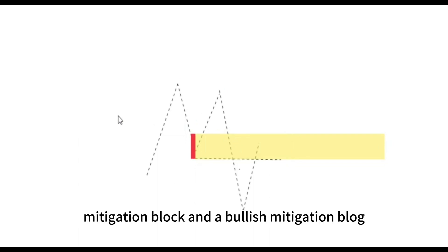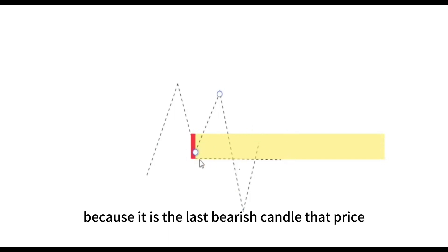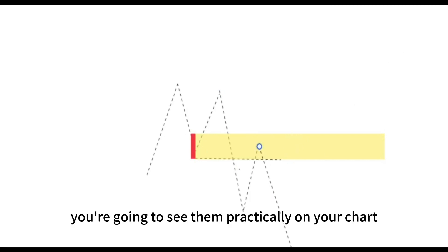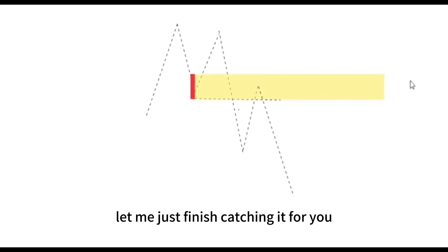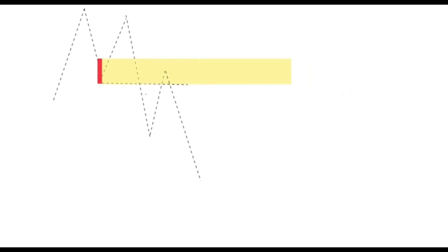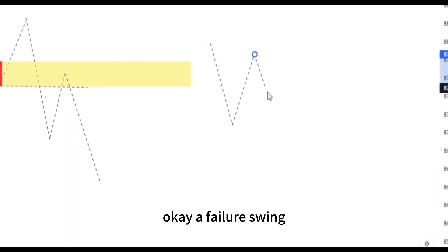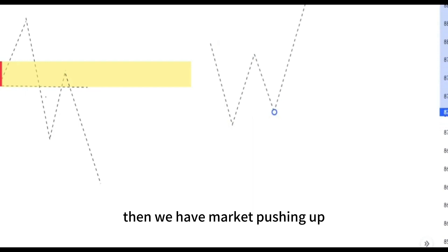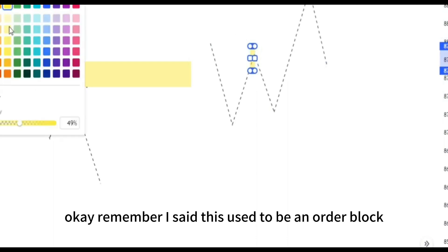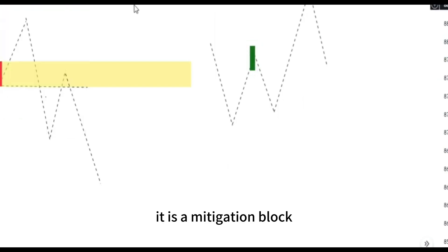Just like order blocks, we have a bearish mitigation block and a bullish mitigation block. In this regard, this is a bearish mitigation block because it is the last bearish candle that price traded through. From here we expect to see price push down. You're going to see them practically on your chart. Let me finish sketching it — this is your bearish mitigation block. And you can also have a bullish mitigation block, where we have a failure swing, market pushing up, and then coming back to test the order block that was violated.